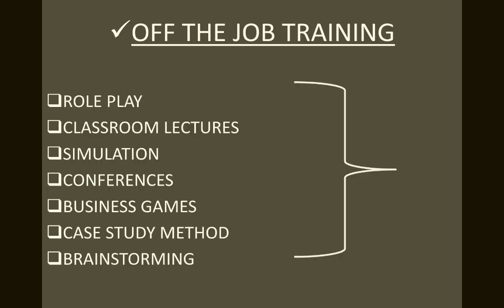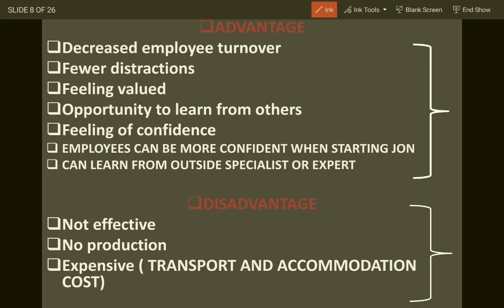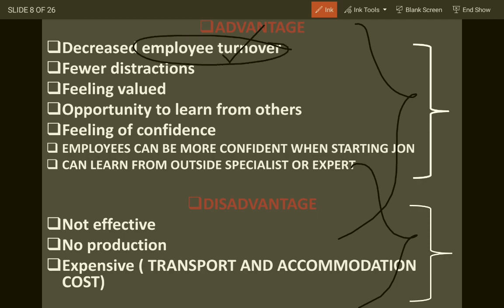The methods of off-the-job training are simulation, case study, classroom lectures, role play, and business games. Now let's focus on advantages. One advantage is decreased employee turnover. When an organization gives training regularly, making employees updated and enhancing their skills and knowledge, employees feel motivated. Employee turnover rate refers to the number of employees leaving the organization. Most organizations face high employee turnover due to lack of facilities, monetary and non-monetary motivation, and lack of training.